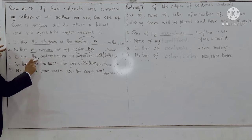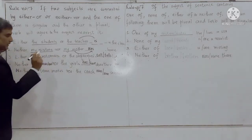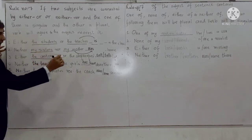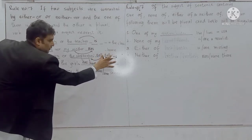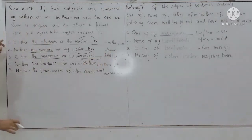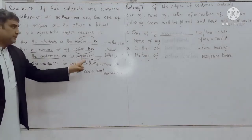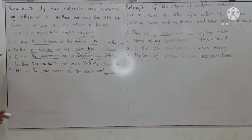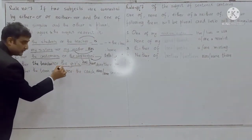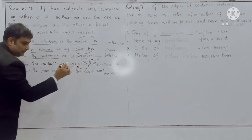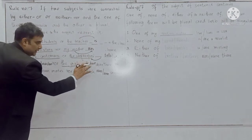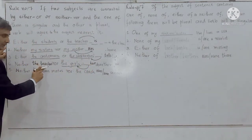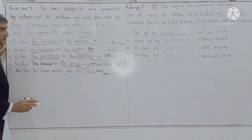Look at example three: 'Either the customers or the shopkeeper.' Here 'customers' is plural and 'the shopkeeper' is singular. The subject nearest to the verb is singular, so a singular verb will be used: 'Either the customers or the shopkeeper tells.' Example four: the subject nearest to the verb is 'the girls,' which is plural, so we use a plural verb: 'Neither the teacher nor the girls have done their job.'